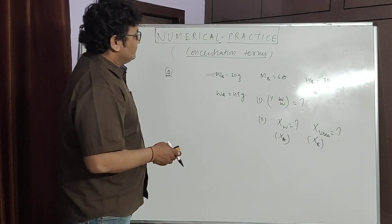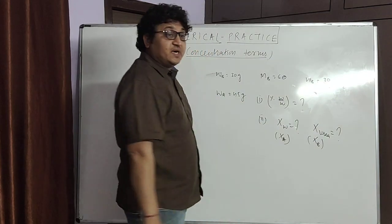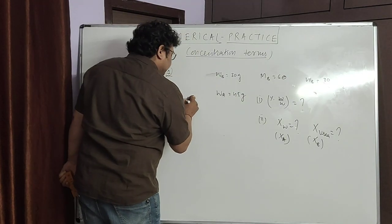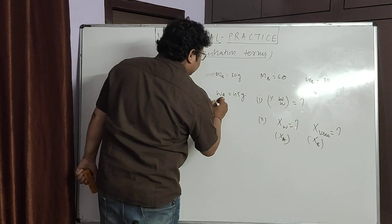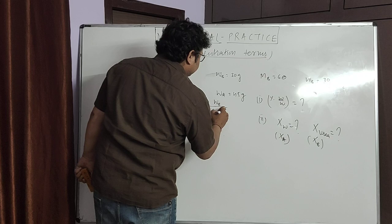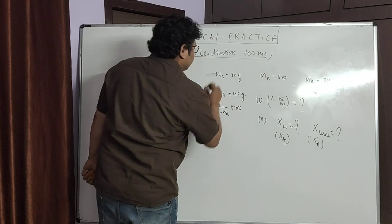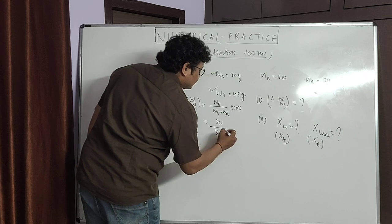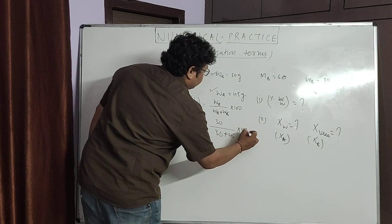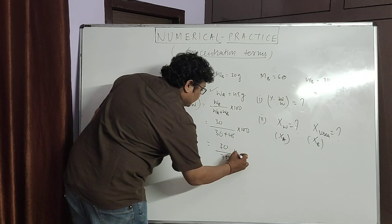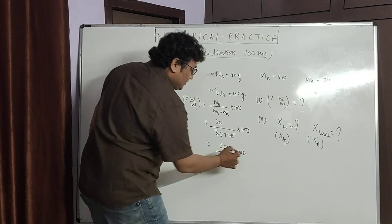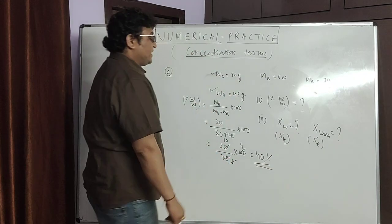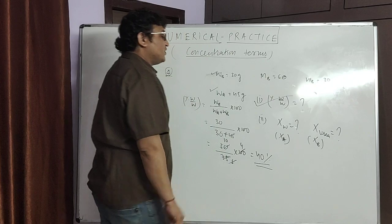Let us do this question. For percentage weight by weight: weight of solute divided by weight of solution, multiplied by 100. The calculation gives 30 divided by 75 (total solution mass), which simplifies and the answer is 40% by mass.